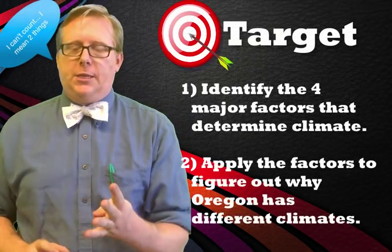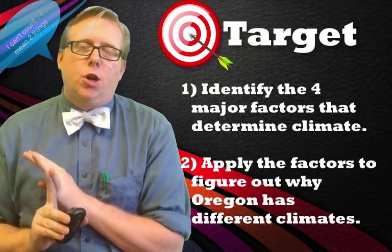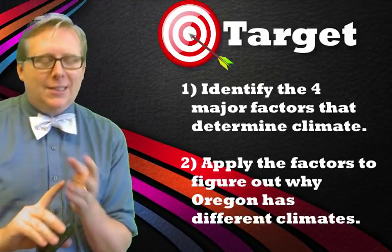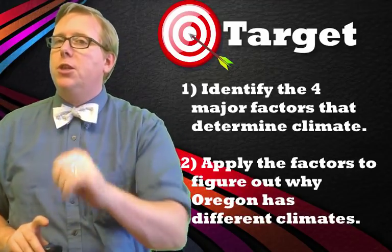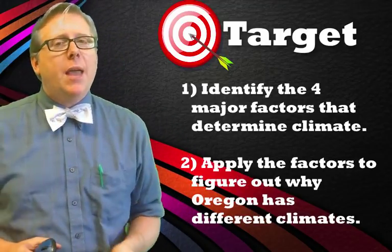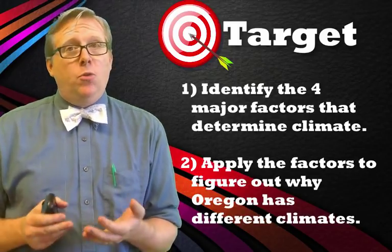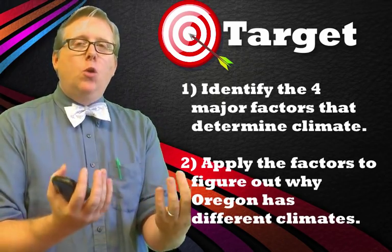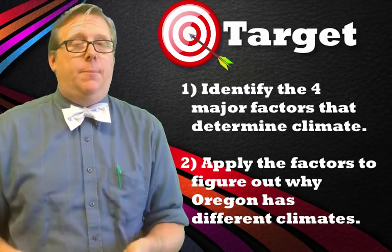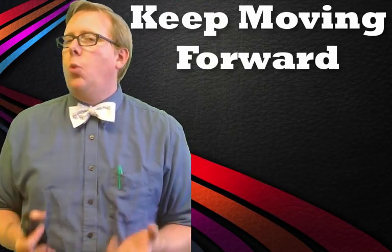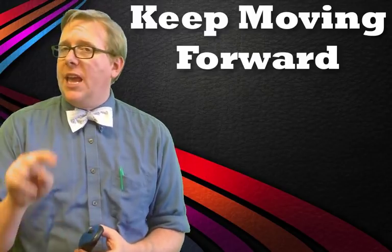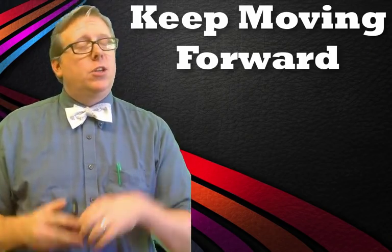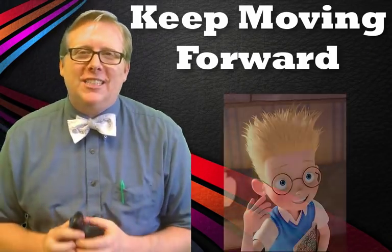In this video we identified the four major factors that determine climate — landforms, prevailing winds, latitude, and ocean currents — and saw that Oregon's climate is largely driven by the Cascade mountain range, which causes the eastern side to be dry, and the Pacific Ocean, which causes the western side to get rain. If there's something you're not understanding, feel free to pause or go back and watch again. But remember to always keep moving forward.